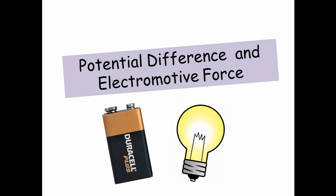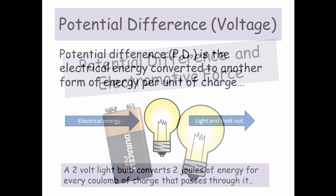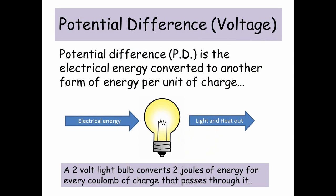Hi guys, today I want to talk about potential difference and electromotive force. So potential difference — voltage — sometimes known as PD, is the electrical energy converted into another form of energy per unit charge.